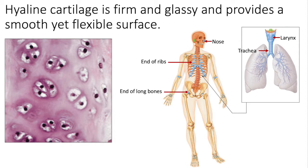Hyaline cartilage is a very smooth and flexible type of cartilage. There's actually a lot of collagen in it, but it has a very glassy, pearly appearance — I think it looks kind of like a Monet painting, sort of like a watercolor, washed, dreamy appearance. But that's my opinion.